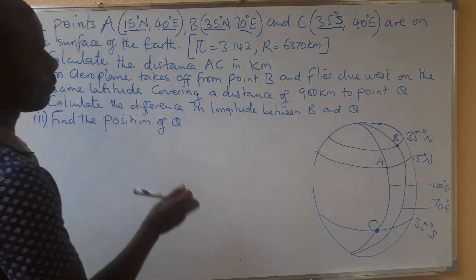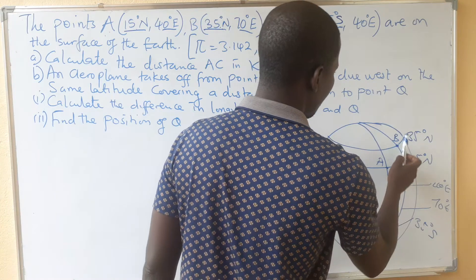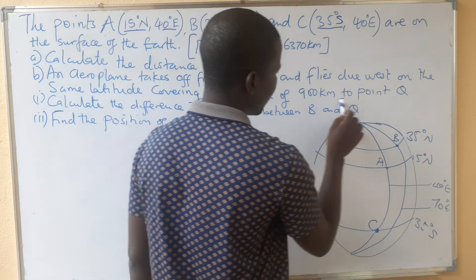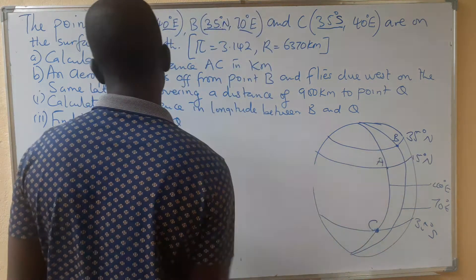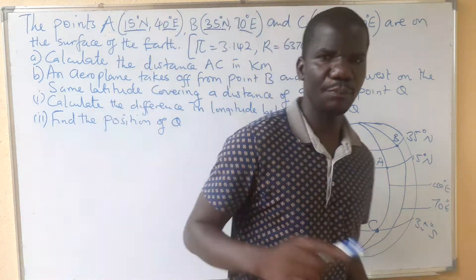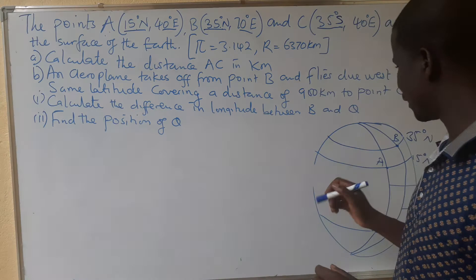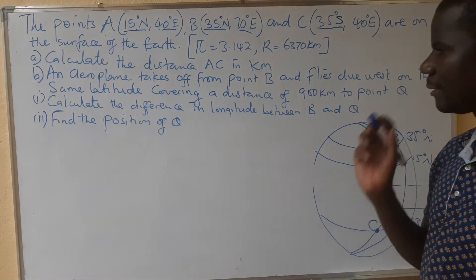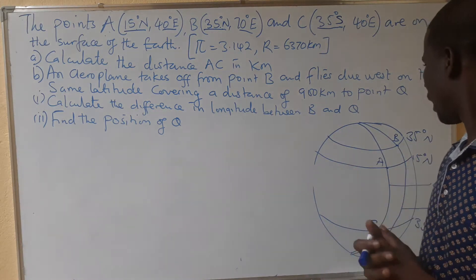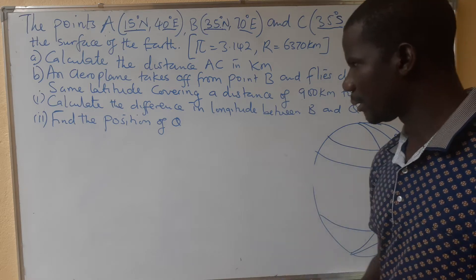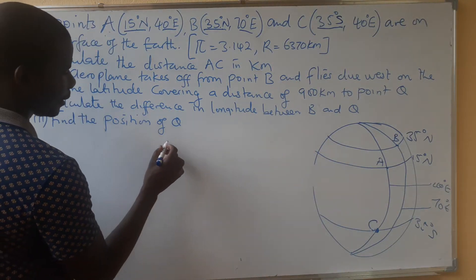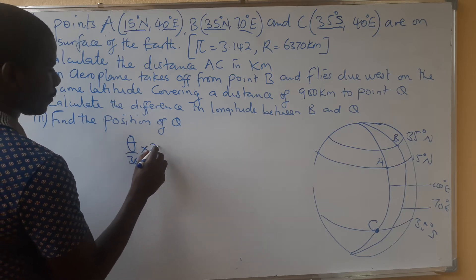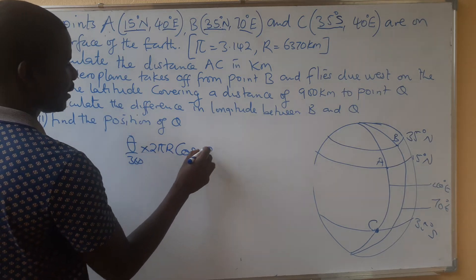Now we have: an airplane takes off from B and flies due west on the same latitude, covering a distance of 900 kilometers to point Q. Calculate the difference in longitude between B and Q. It's very important to know the formula used to find the distance between two points on the same latitude.